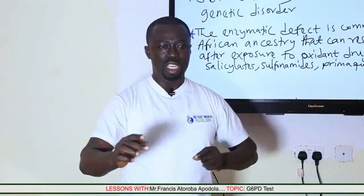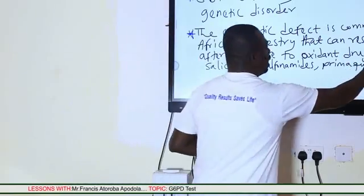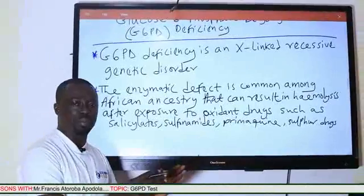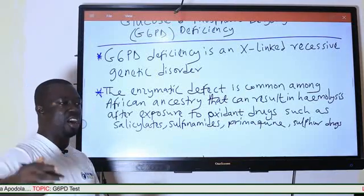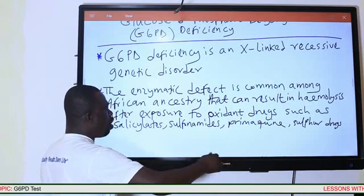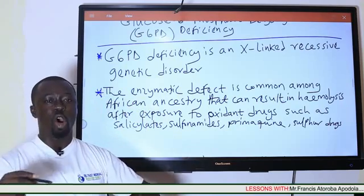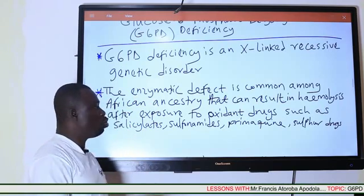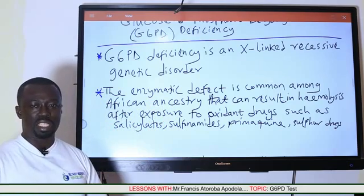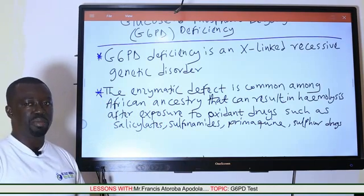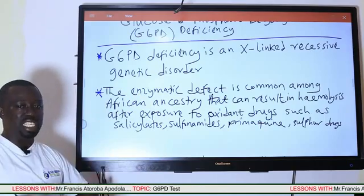In the case of blood cells, this oxidation results in the breakdown of red blood cells, which is called hemolysis — 'hemo' meaning blood and 'lysis' meaning breakdown. Some common oxidant drugs that can cause the cells of G6PD-deficient individuals to undergo oxidation include salicylates, sulfonamides, primaquine, sulfur drugs, and many other antibiotics that contain oxidants which can trigger the breakdown of red blood cells.